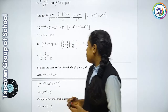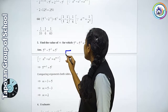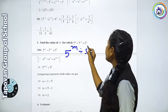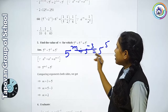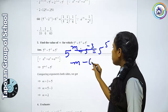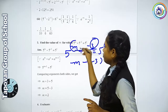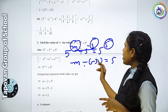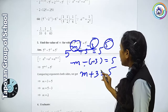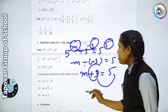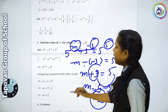Then question number 5: find the value of m. Yahan pe value of m find out karni hai. Question kya hai? 5 raise to m divide by 5 raise to minus 3 is equal to 5 raise to 5. To first thing — upar wali power ki baat karte hain. Divide mein kya hota hai? M minus minus 3 is equal to 5. Minus minus plus: m plus 3 is equal to 5. Ab ye plus 3 yahan pe rahega to kya hoga? Minus. So m is equal to 5 minus 3 — kitne bache? 2. Yahan m ki value kitni mili? 2.